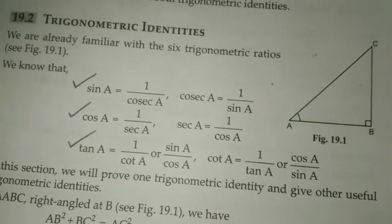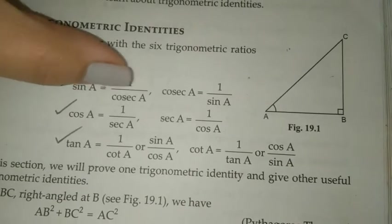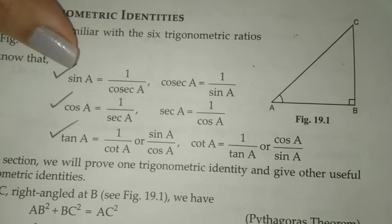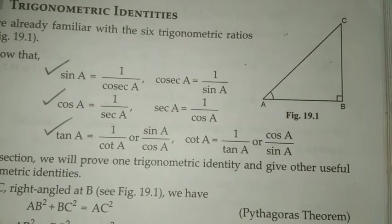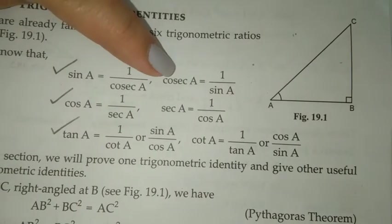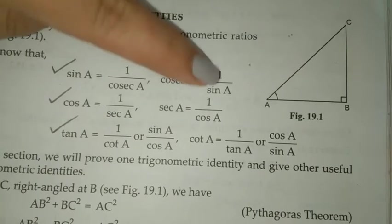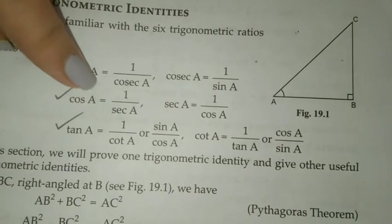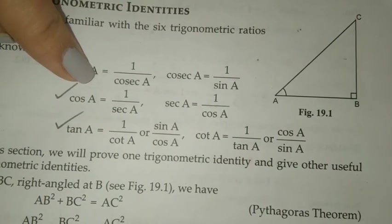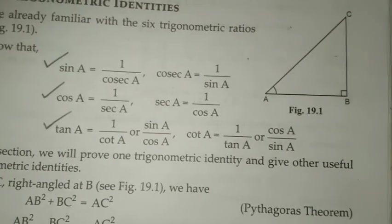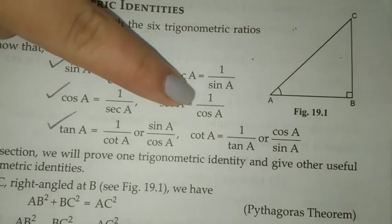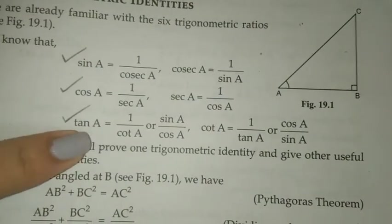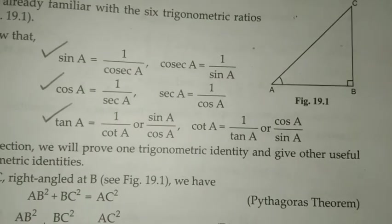Now let's review the reciprocal relationships. sin A and cosec A are reciprocals, so if sin A is one by root two, then cosec A is root two by one. Similarly, cos and sec are reciprocals, and tan and cot are reciprocals.